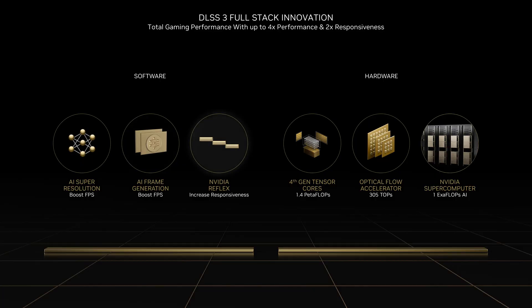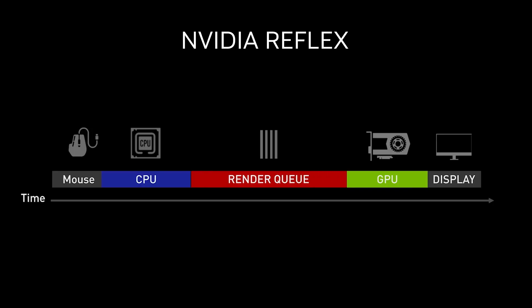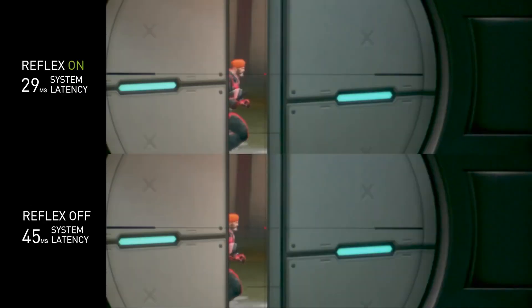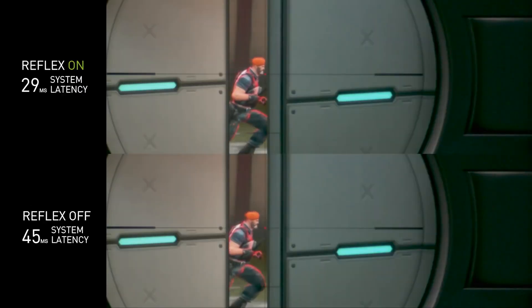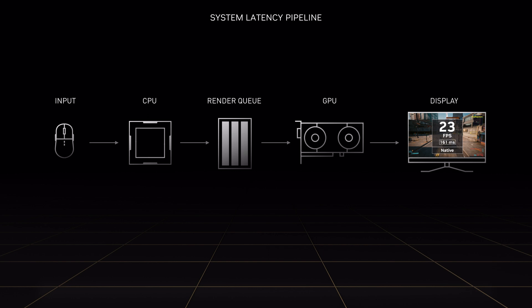DLSS 3 can boost performance by an additional 2x through frame generation over DLSS 2, or 4x compared with brute force rendering alone. The third software component is NVIDIA Reflex, which synchronizes the CPU and GPU in order to keep FPS high while significantly lowering latency. It turns out there's a lot of latency in a traditional game rendering system because we're queuing up work for the GPU in order to keep the FPS high. We call this the render queue.